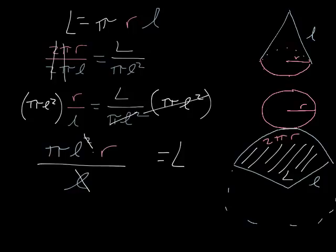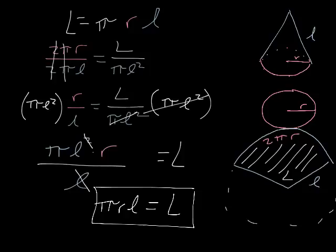So what am I left with? Well, π, l, and r. If I just rearrange the order, I get what I had before, which is πrl. And that's how we find the lateral area of a cone.